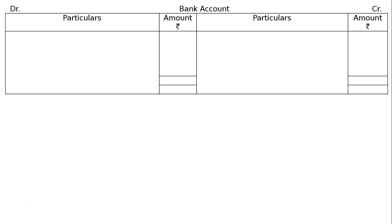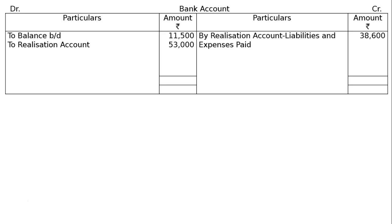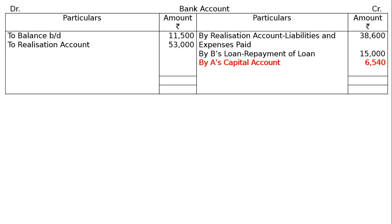Now the Bank Account. By Balance brought down: Rs.11,500. By Realization Account — Assets Realized: Rs.53,000. On the credit side: Realization Account — Liabilities and Expenses Paid Rs.38,600. Direct payment of B's Loan: Rs.50,000. By B's Loan — Repayment of Loan Rs.15,000, this is a direct entry. By A's Capital Account — Final Payment Rs.6,540. By B's Capital Account Rs.4,360. The total is Rs.64,500 on both sides.